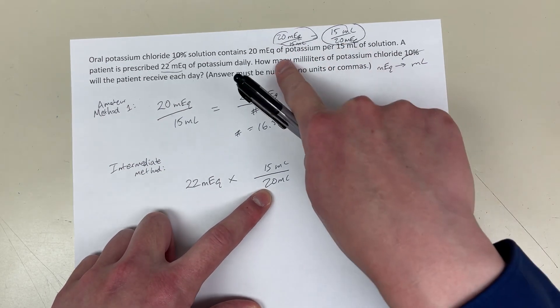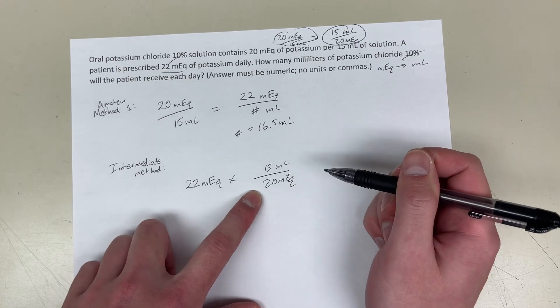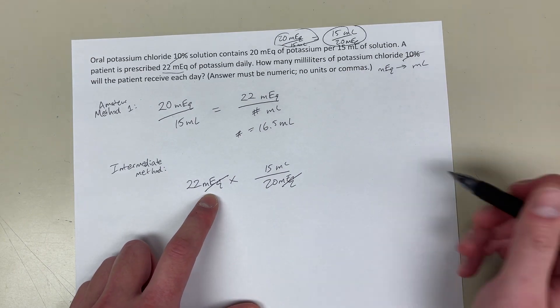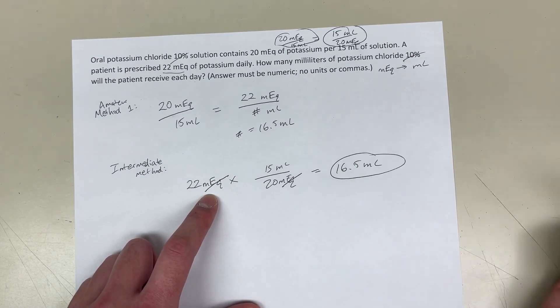Right? 15 milliliters, there's 20 milliequivalents. And I know to use this one because it's in the denominator. So, these two cancel out. Right? And that equals 16.5 milliliters. Right? That's the answer also.